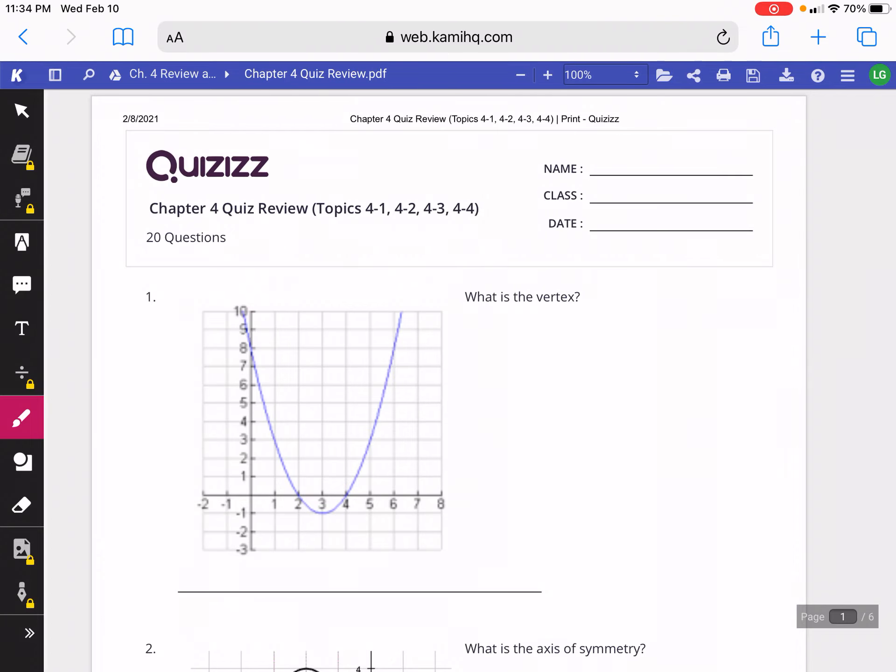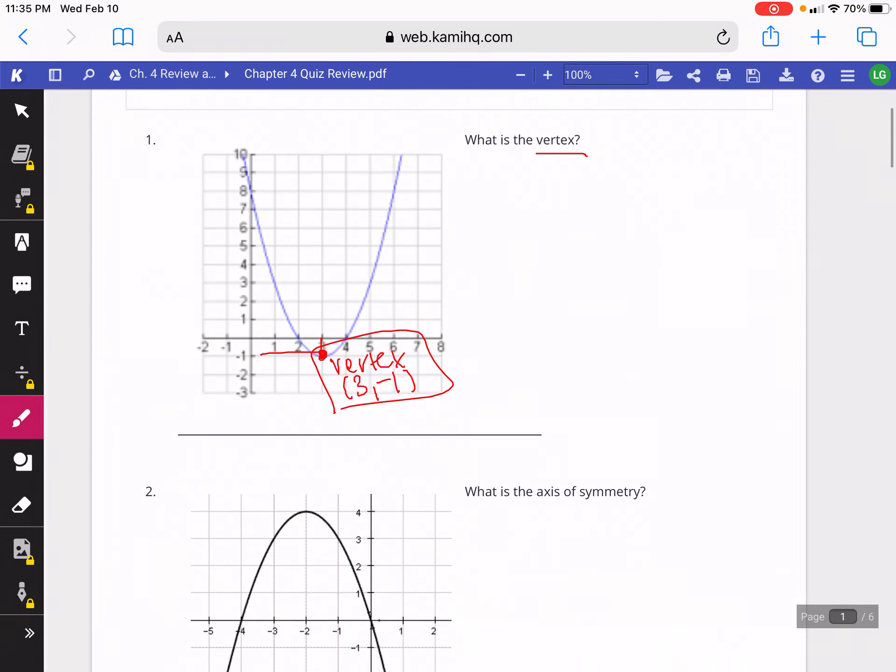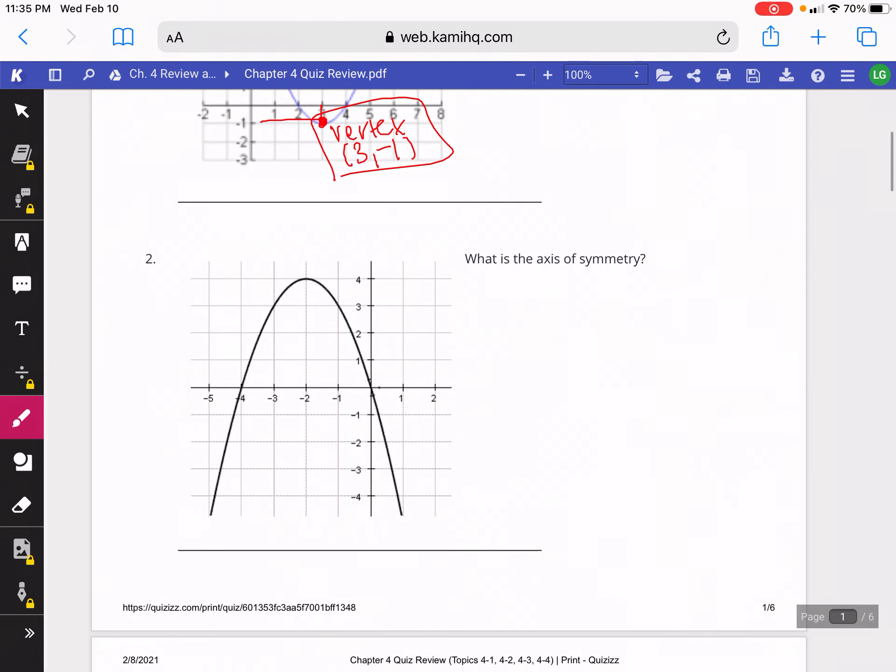In this video we're going to review for the Chapter 4 quiz. In this problem we have a parabola and it's asking us to find the vertex. Remember, the vertex is the midpoint of the parabola, so that would be here. Your vertex is a point, so that would be at (3, -1).